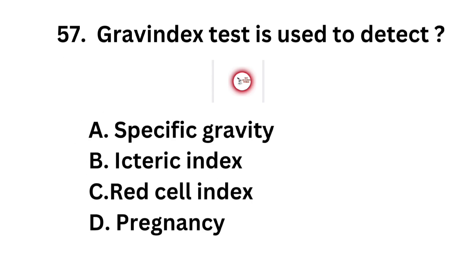Question number 57. Graham index test is used to detect: Option A: Specific gravity. Option B: Icteric index. Option C: Red cell index. Option D: Pregnancy.